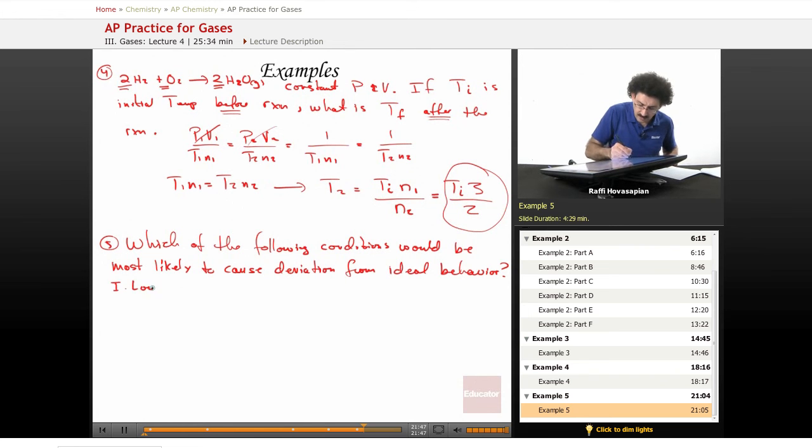We have one, low pressure. Two, low volume. Third choice is low temperature. Fourth choice is high temperature. And five, we have high pressure.